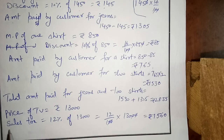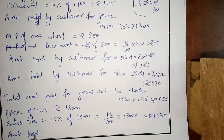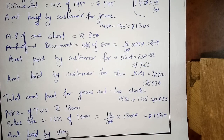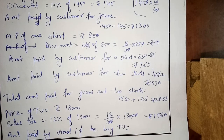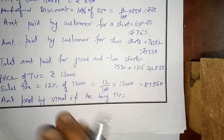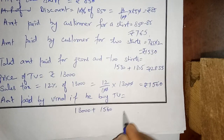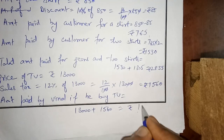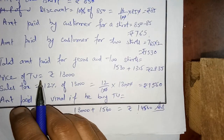Sales tax comes to Rs. 1,560. Amount paid by Vinod if he buys the TV: 13,000 plus 1,560 equals Rs. 14,560. Check the answer — yes, this is the answer of this question.